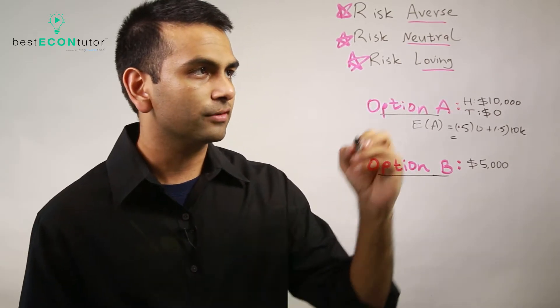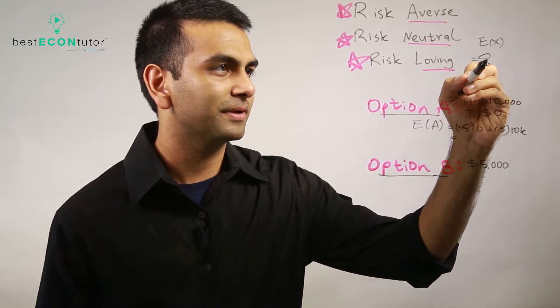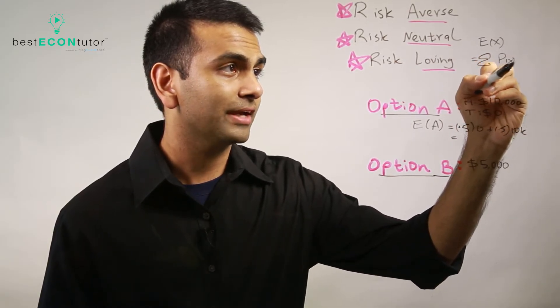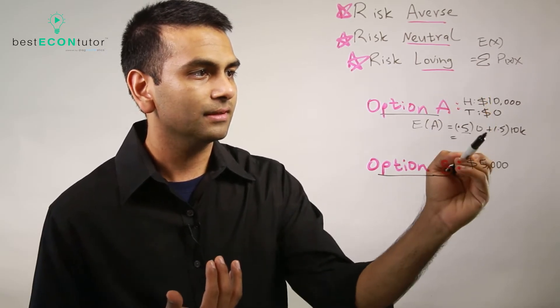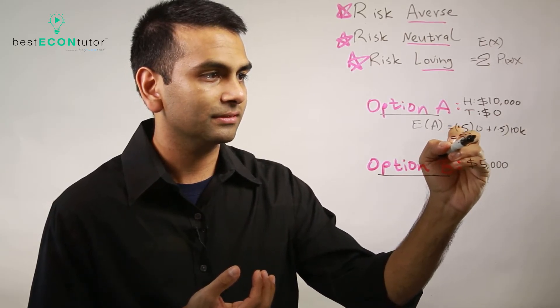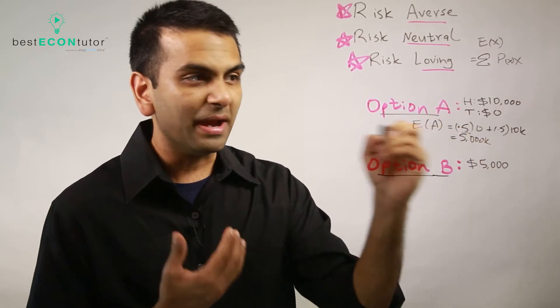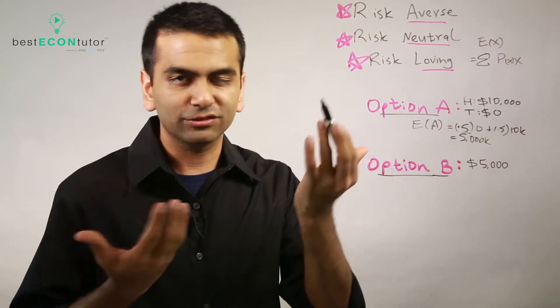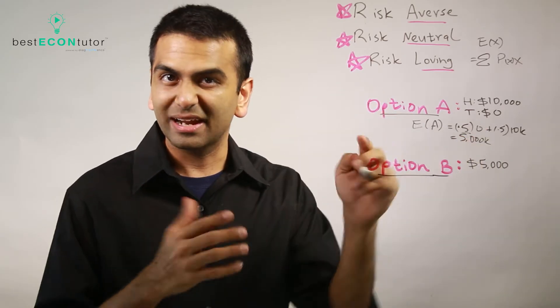For any given numbers, you can determine what type of risk profile a person has — whether they're risk loving, risk neutral, or risk averse. One thing you need to be able to calculate is the expected value. It's really a fancy way of saying the average, but we weight it by different probabilities. The formula for the expected value of X is the sum of P(X) times X.